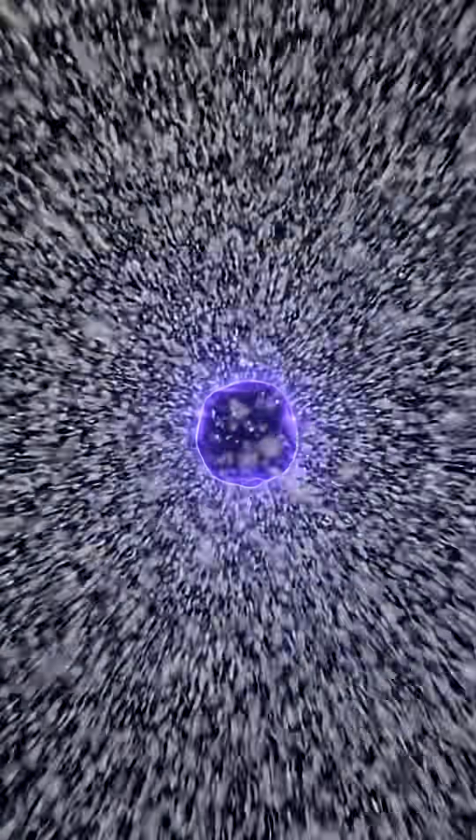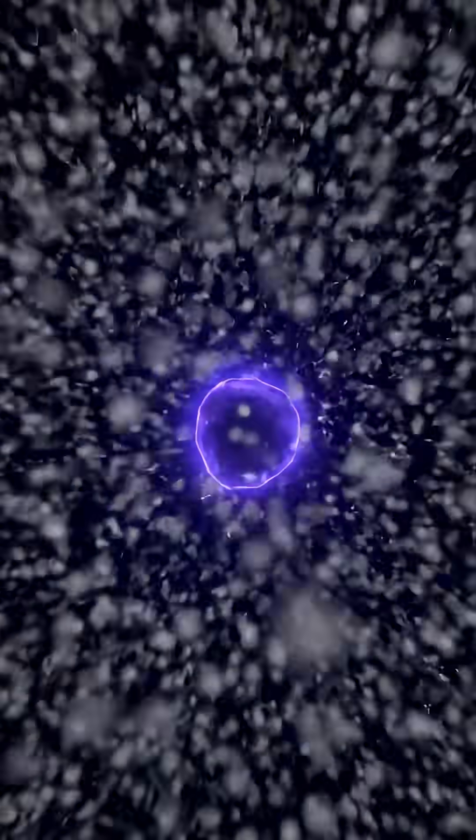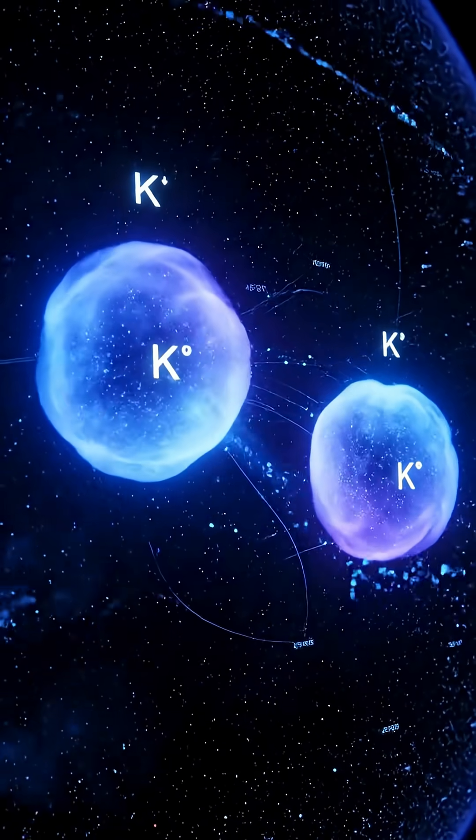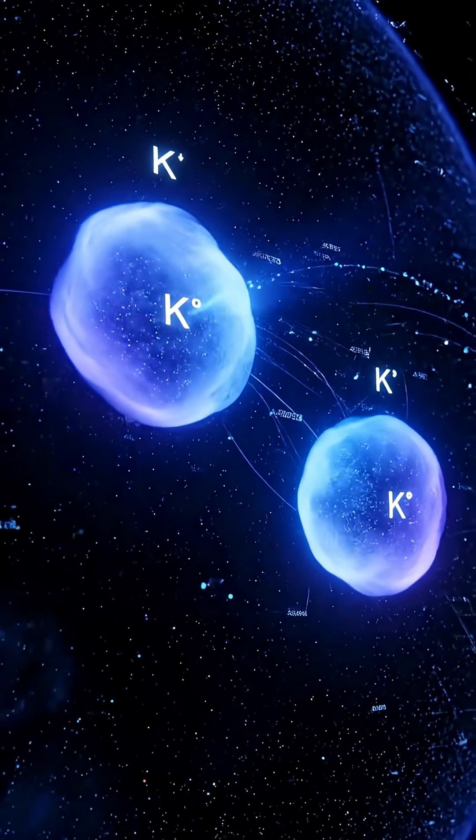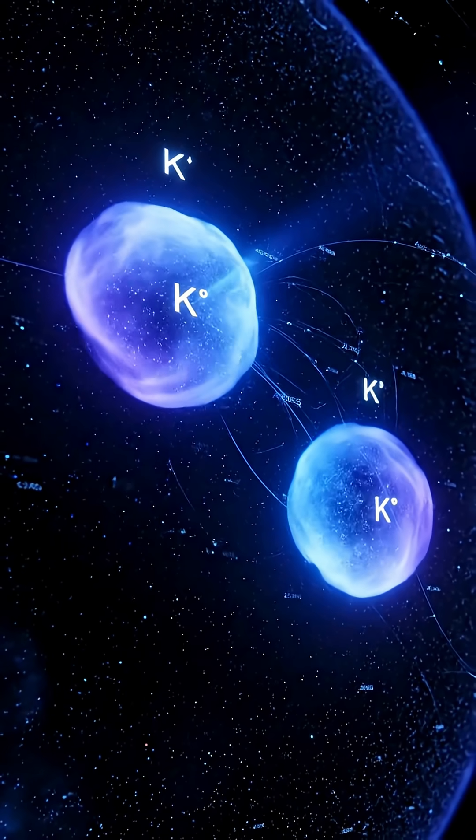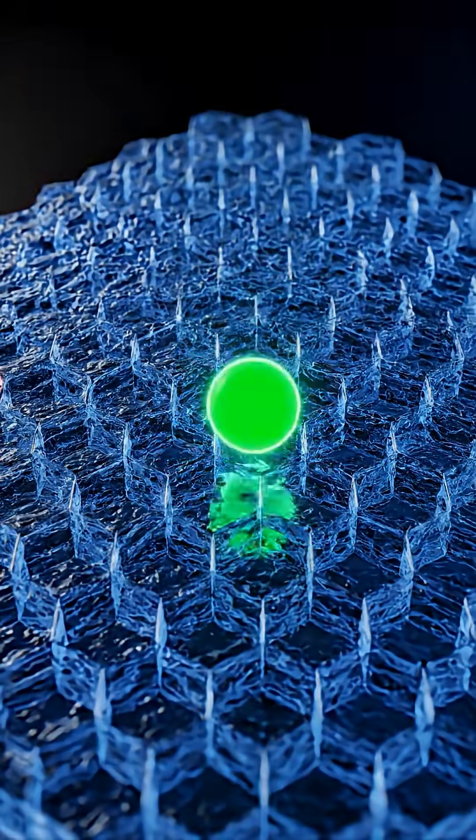What happens when you crank up the temperature or the intensity? The valley polarization collapses. Fast. But under the right setup, a single excitonic state holds the line. That's the record. That's what remains unexplained.